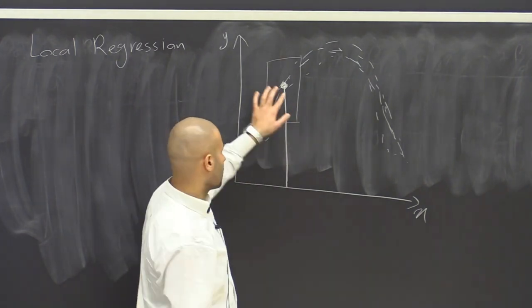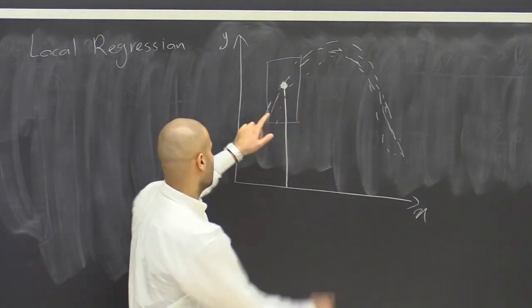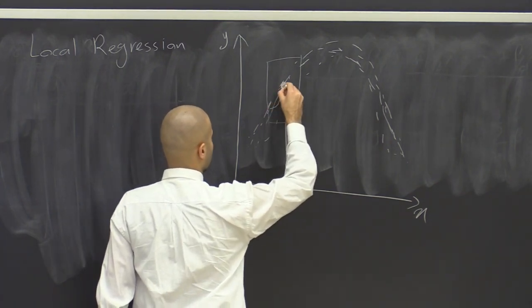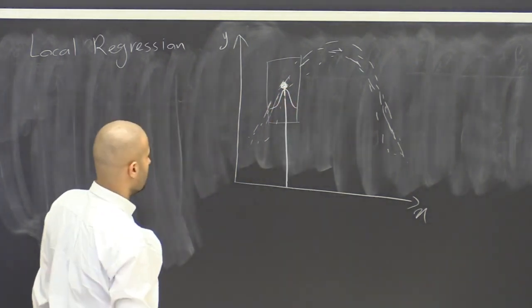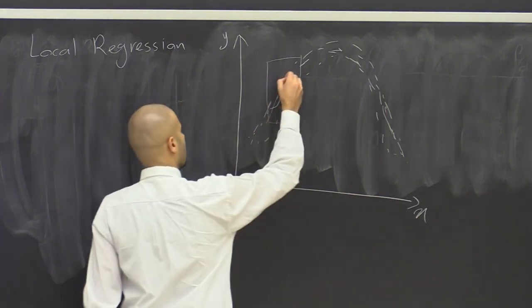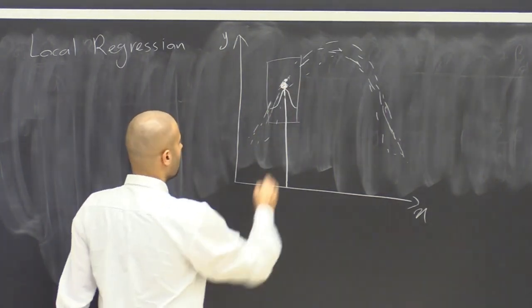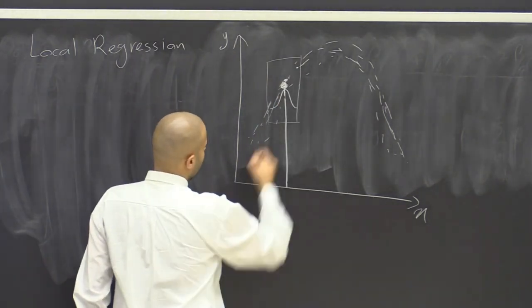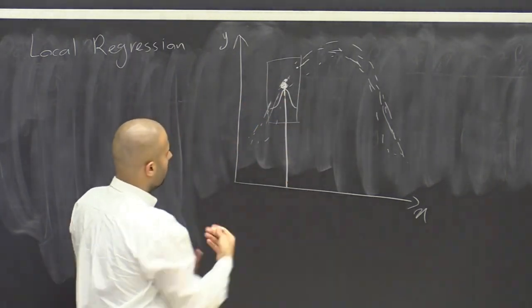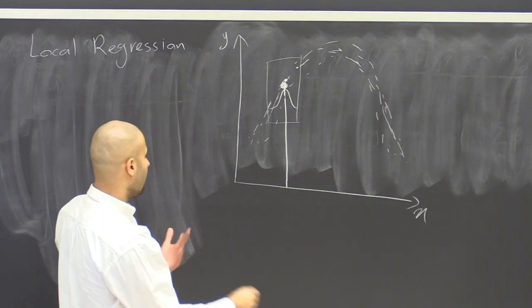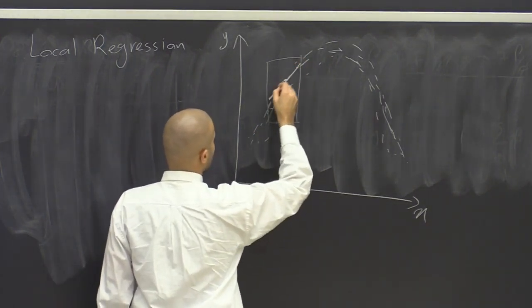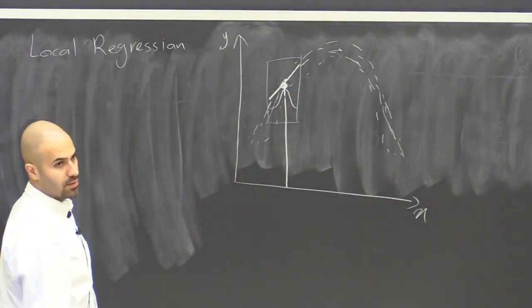And we also care about the points that are at the center of this window more than those that are at the extremes. So this is as if we have some sort of distribution function, maybe some Gaussian distribution function here that defines we care about this point more than we care about this point for fitting a function in here. And then as we are estimating the slope and intercept in a local way here for this part of the data, we would get some regression line like this.